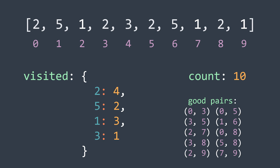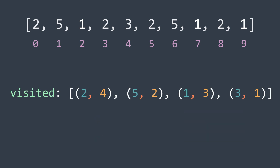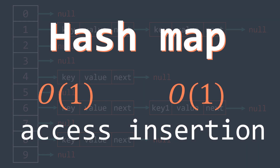Before moving to the code, here are the two reasons I chose a hash map. First, we don't need to know what values will be in the structure before starting — we just create an empty hash map and add a new key-value pair each time we find a new value. We could also use an array, but with a hash map, accessing and inserting elements is O(1) on average, which reduces our overall time complexity to O(n).